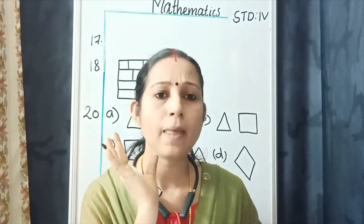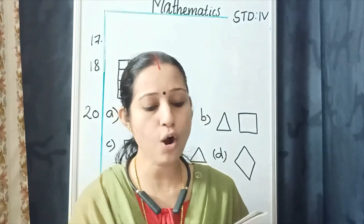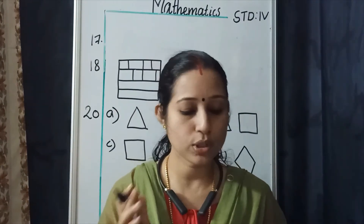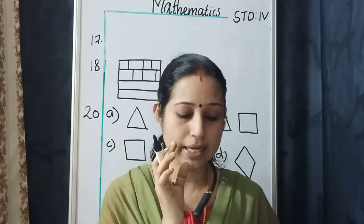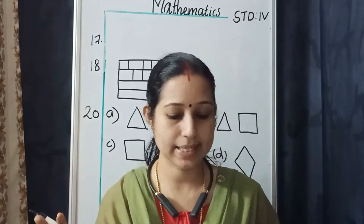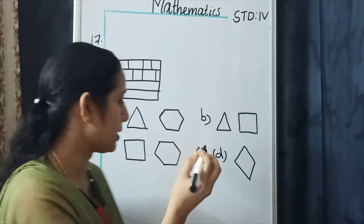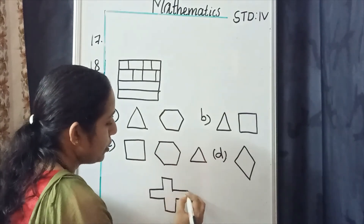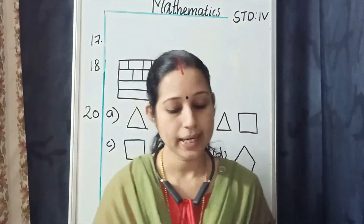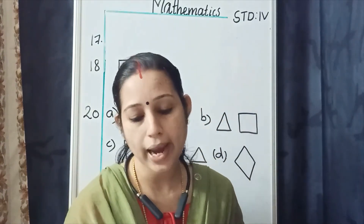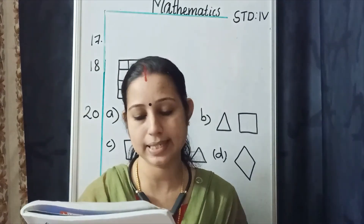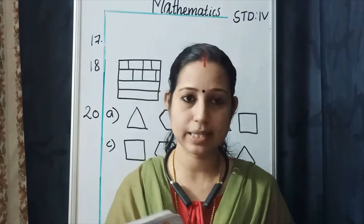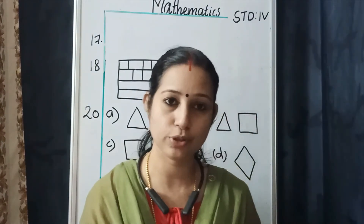Question 21: Form a tessellation using the given shapes and color them. The first part uses two types of triangles; the second uses a plus/cross symbol shape. Question 22: Draw and color a tessellation using arrows, and create another using triangles. Do questions 21 and 22 in your workbook.